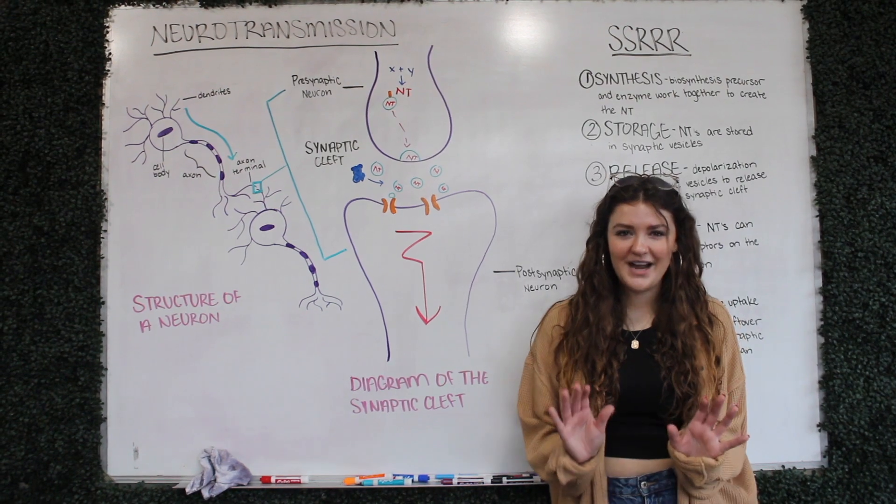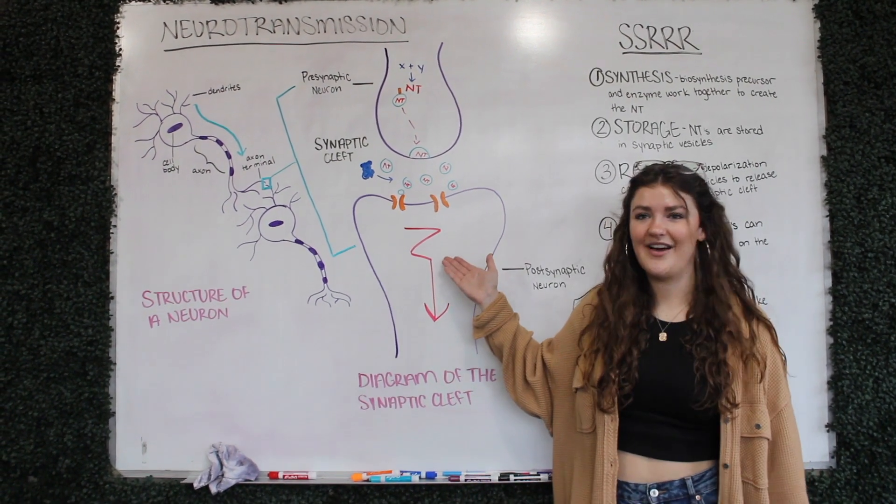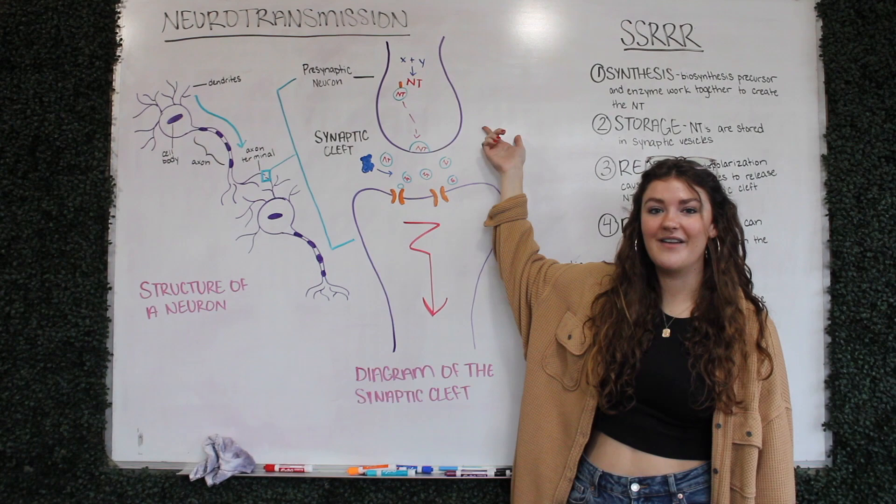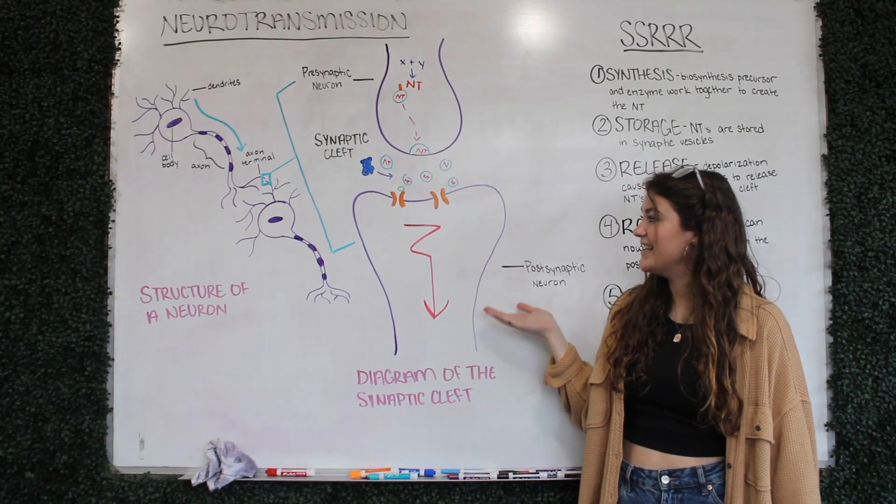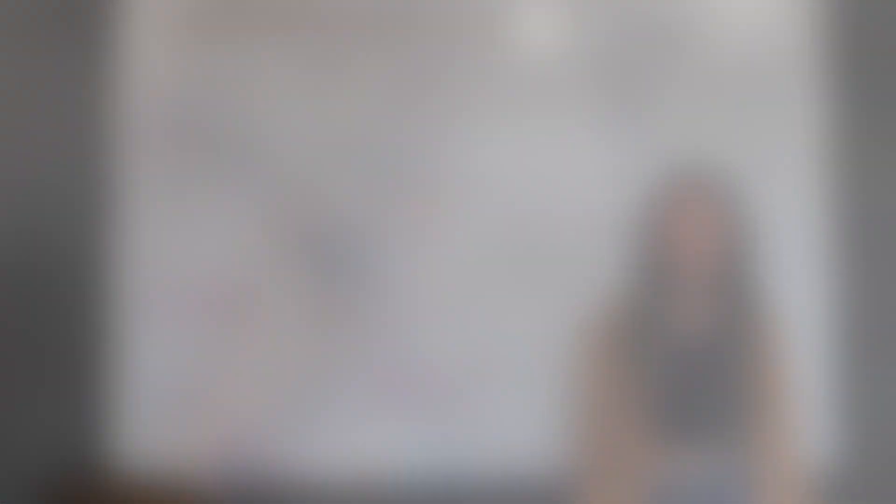They are separated by a microscopic gap called the synaptic cleft. The presynaptic neuron is the axon terminal of the neuron that comes before the synaptic cleft, and the postsynaptic neuron is the dendrite of the neuron that comes after the synaptic cleft.